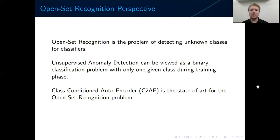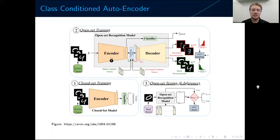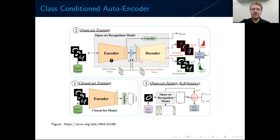The state of the art for the open set recognition problem is the class-conditioned autoencoder, which we heavily based our solution on. The class-conditioned autoencoder consists of two things: a classifier and a conditional autoencoder. During the training phase, we first train the classifier in the normal way, and we train the conditional autoencoder such that we give it an input with the condition — which is the label corresponding to its class, a matching label — and we expect it to reconstruct the input faithfully, resulting in low reconstruction error.